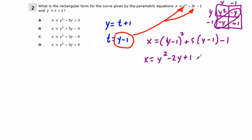And so we're going to get plus 5y. And then that's the distribution here. We're going to get minus 5 minus 1. And just simplifying from here out, we have plus 1 and minus 1 cancel each other out. And we're left with x equals y squared. We have minus 2y plus 5y. That'll be plus 3y, and minus 5. So our correct answer is going to be C.